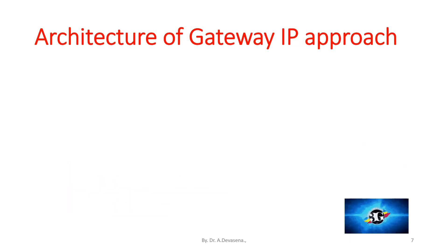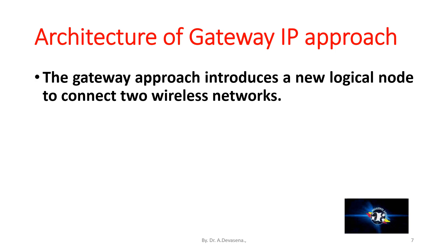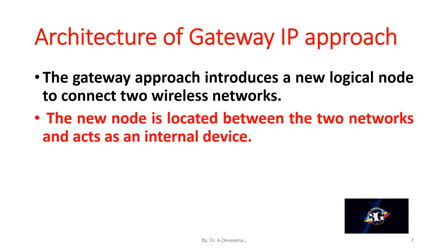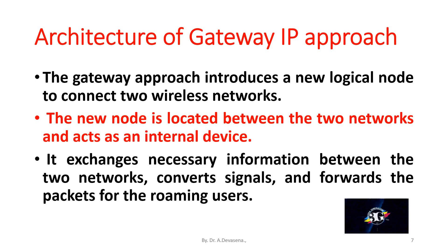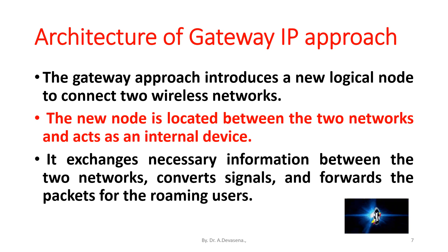Next, we are going to discuss about the architecture of the gateway IP approach. The gateway approach introduces a new logical node to connect the two wireless networks. The new node is located between the two networks and acts as an intermediary device. It exchanges necessary information between the two networks, converts signals, and forwards packets for roaming users.